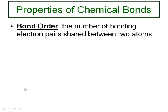The first one we're going to look at is something called bond order, which is simply defined as the number of bonding electron pairs that are shared between two atoms. To fully explain what that is, we're going to look at a couple of example molecules. One thing to remember is that this number does not have to be a whole number — it can be a fraction.